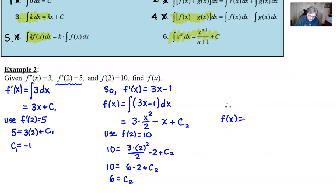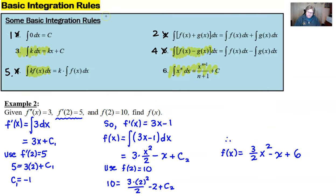So therefore our function f of x, and you should finish the problem, would be 3 halves x squared, notice what I'm doing is I'm going back to the step, minus x plus your 6. And that's how you solve an initial condition problem and at the same time renumber your formulas so that they make sense. Thanks for joining, trig integrals are up next, hope you join us at that video, take care.